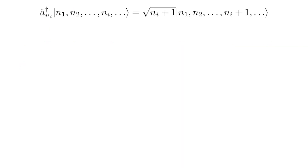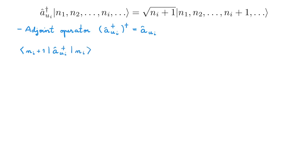The next thing I want to discuss is the adjoint operator of the creation operator, which is given by aUI. To figure out what this operator does, let's write the matrix element of the creation operator between two Fock states, using simplified notation. Using the action of aUI-dagger, we get the normalization factor and then a bracket, which gives 1 because Fock states form an orthonormal basis.